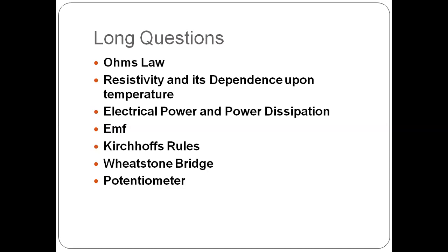What is conductance? It is the inverse of resistance. If there is a conductor, conductance shows how well it conducts. The inverse of resistivity is conductivity. The SI units of conductance are Mho and Siemen, and the SI units of conductivity are Mho per meter or Siemen per meter.